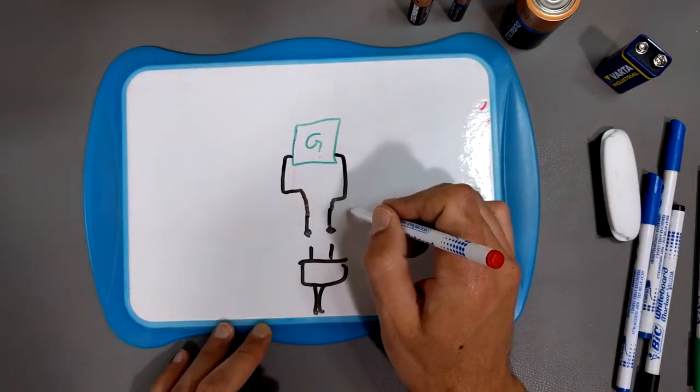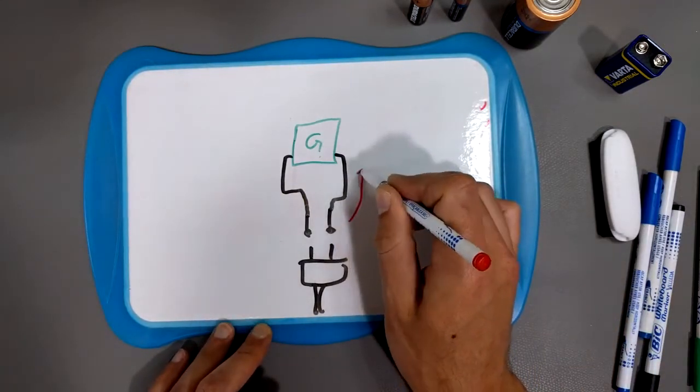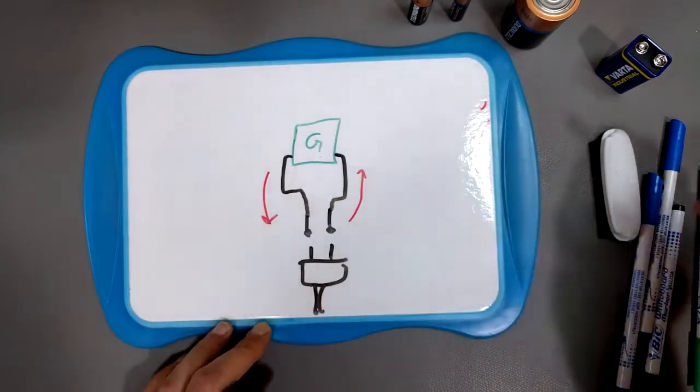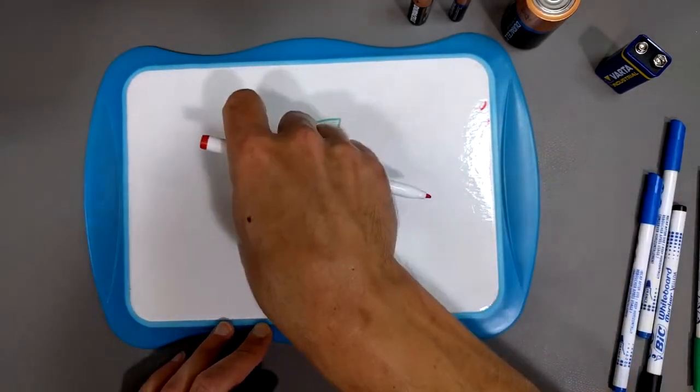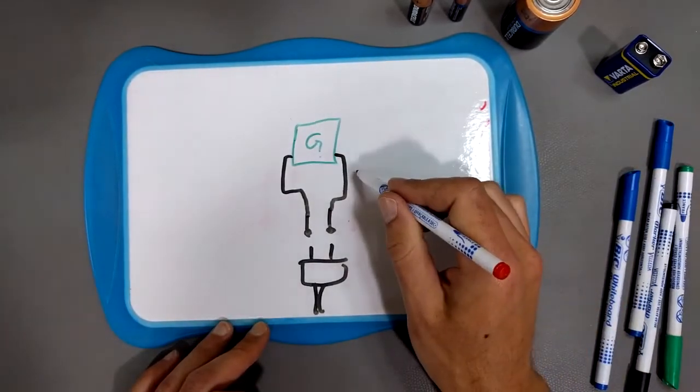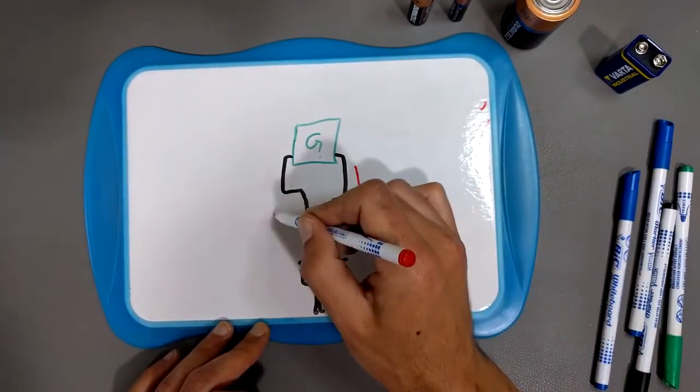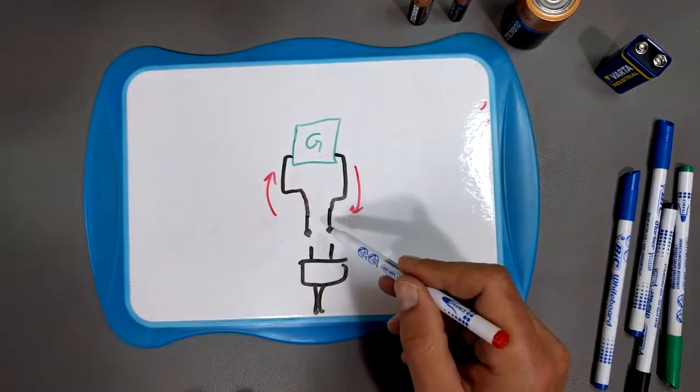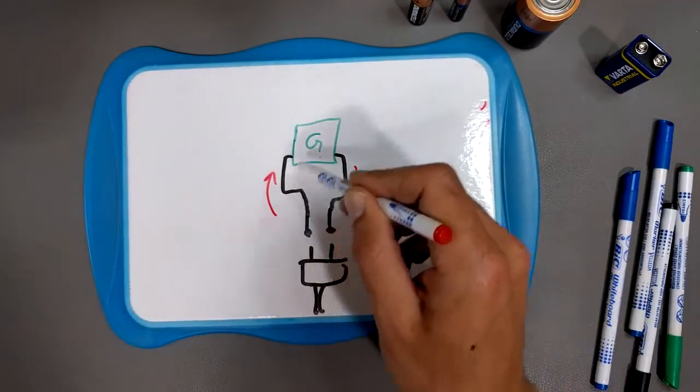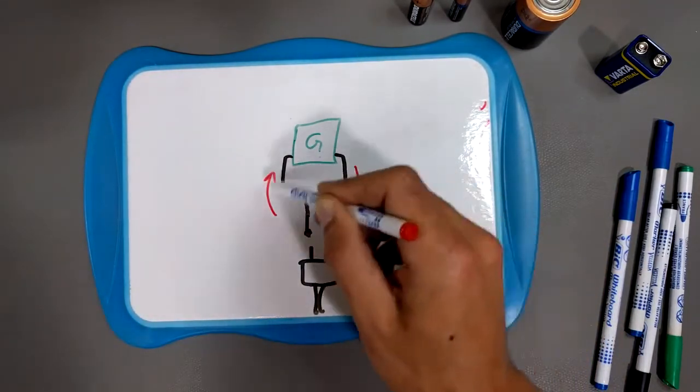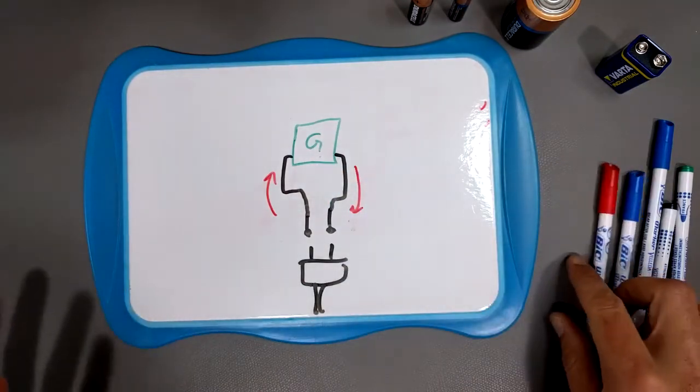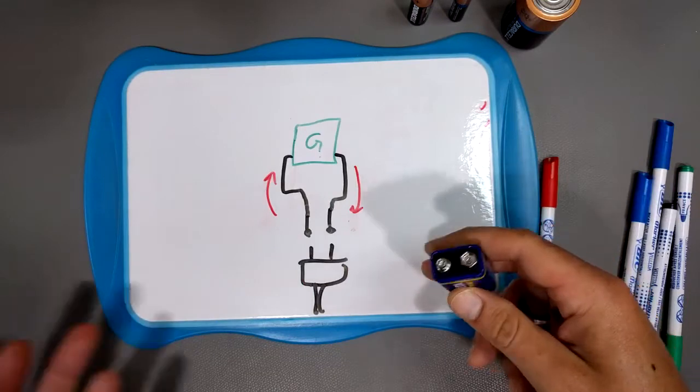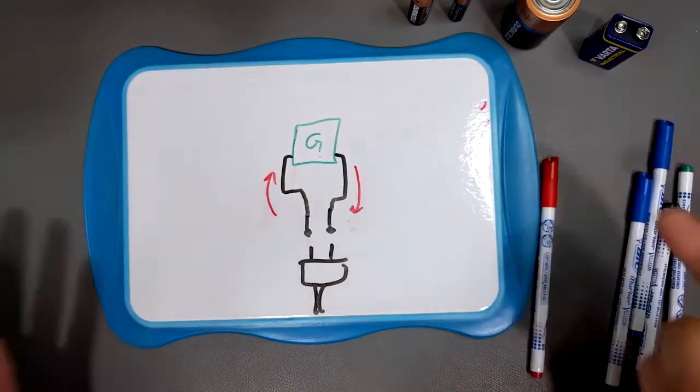But what happens is the current is alternating. So at one instant, the electrons flow this way. In the next instant, they're going to flow that way. So the current kind of goes this way, and then this way, and then this way, and then this way. Well, why in the hell would you do that? Why do they do that?